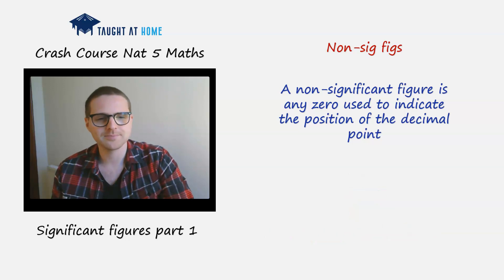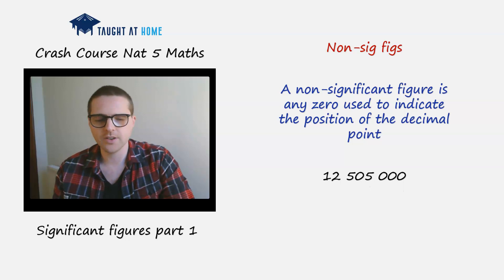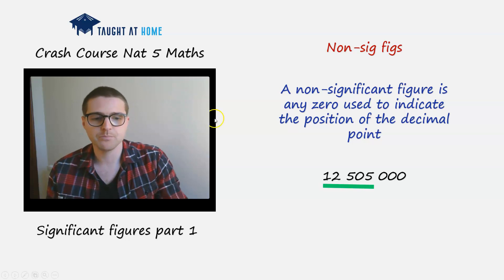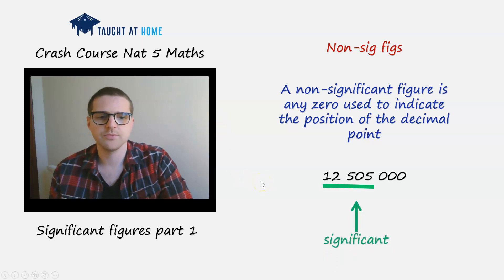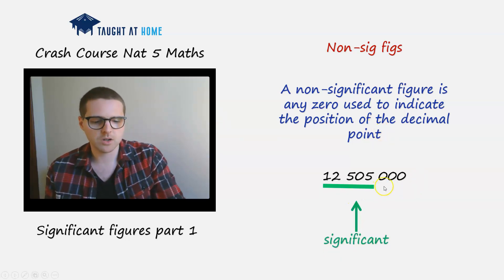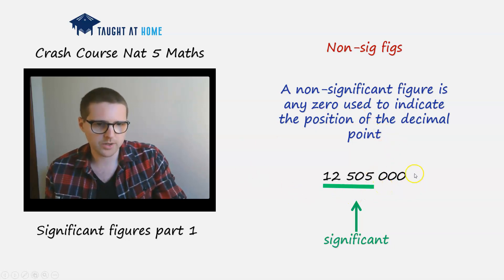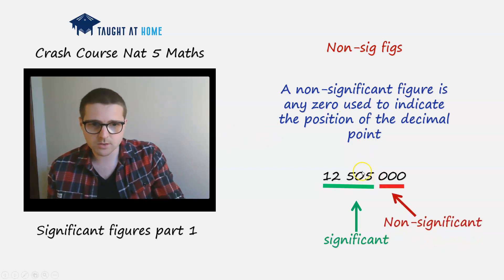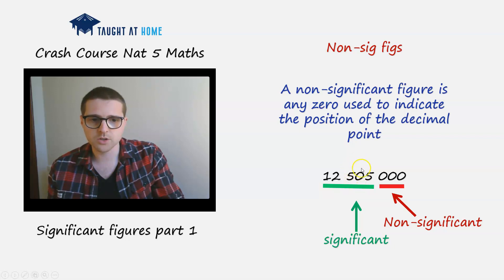Another example: 12,505,000. The digits 1, 2, 5, 0, 5 are significant. The trailing zeros tell us the position of the decimal point, so they are non-significant. The zero between the two fives is significant because it is between two non-zero numbers. So there are five significant figures here.